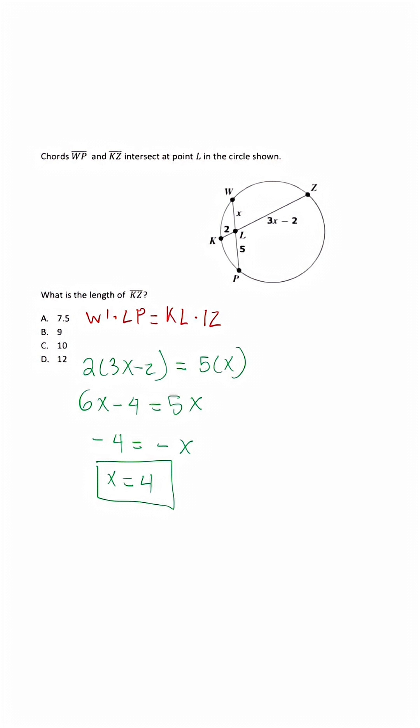But that's not the answer. When we substitute it in for LZ, and we simplify, 3 times 4 is 12, 12 minus 2 is going to give us 10. But remember, they ask not for LZ, but for KZ. So after we have 10, we're going to have to add that last 2 to get an answer choice of 12, and D is going to be our correct answer. And this is how you'll properly solve these type of geometry problems.